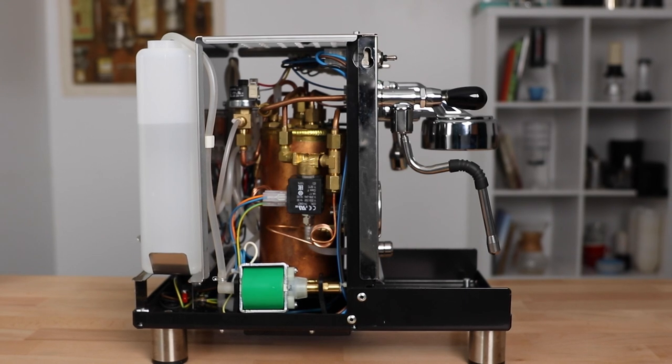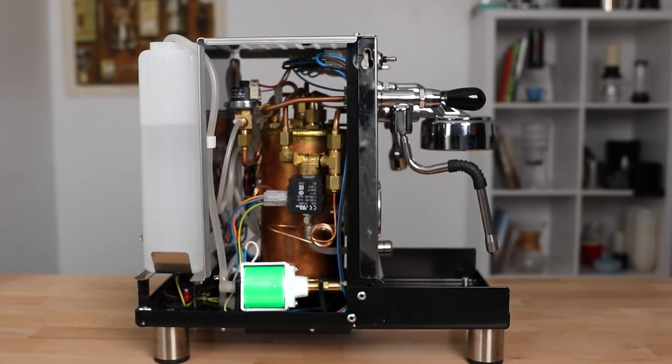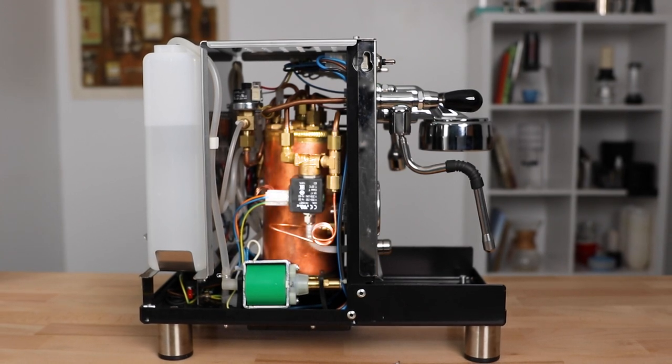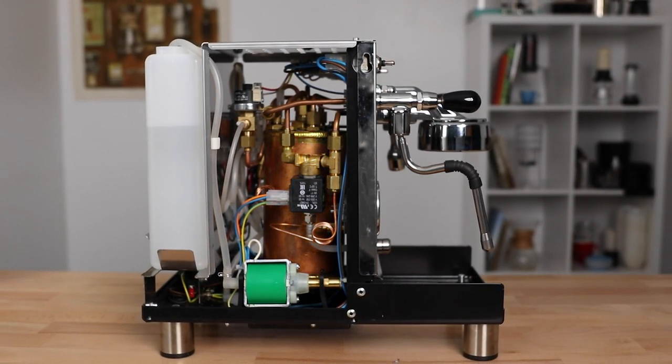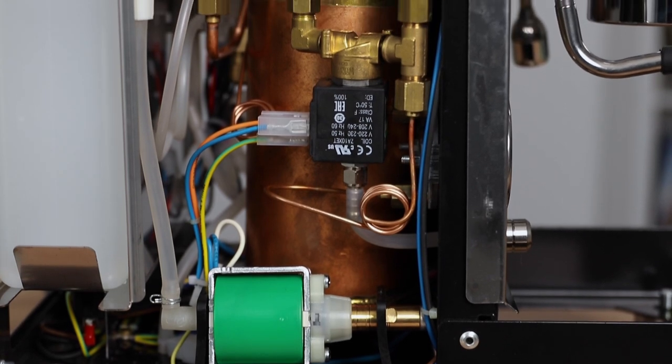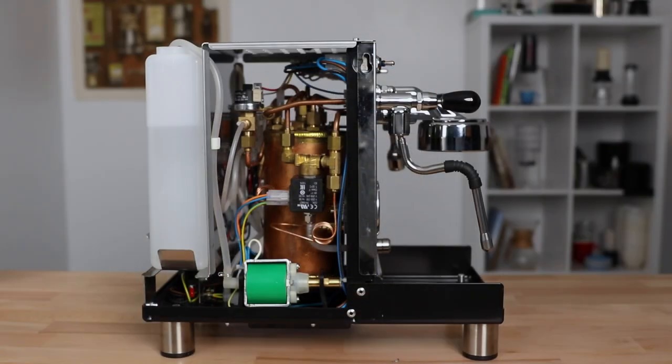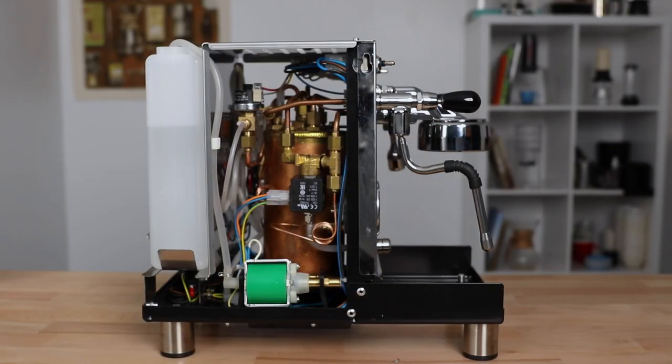Taking a look inside the machine, you have a simple yet quiet vibratory pump to bring water from the tank to the large 1.5 liter heat exchanging boiler. This is a nickel-plated copper boiler powered off of 1400 watts, which gives it plenty of power for quick recovery times between shots.